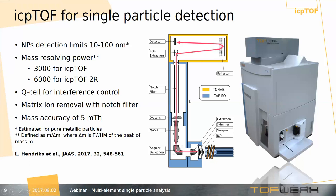The notch filter can also be used for removing some matrix ions from your sample. The mass accuracy of 5 millimasses allows you to qualitatively discriminate analyte peaks from interferences. You can check the recent publication from Lindsay Hendricks from the group of Professor Detlef Günther for more details on figures of merit of this instrument for the measurement of single droplets and single particles.